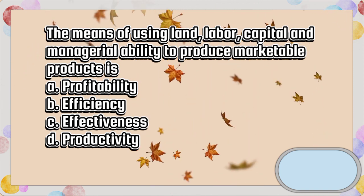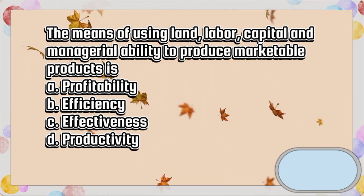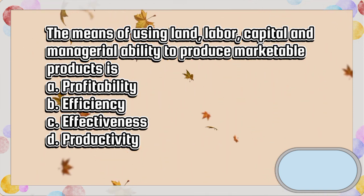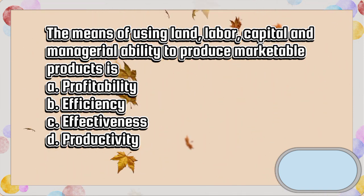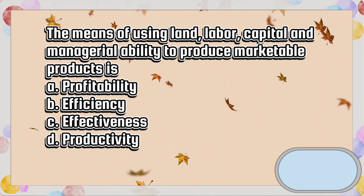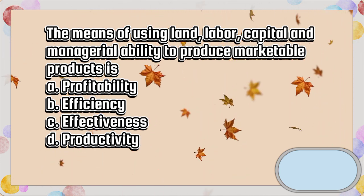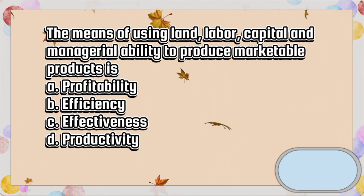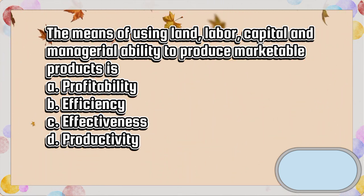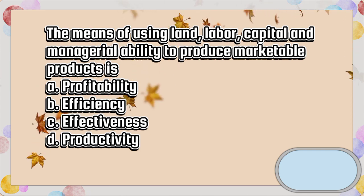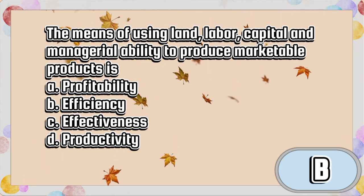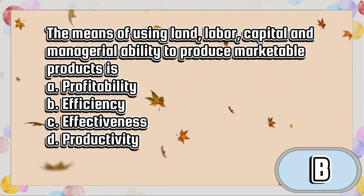The means of using land, labor, capital, and managerial ability to produce marketable products is: A. Profitability. B. Efficiency. C. Effectiveness. D. Productivity. The answer is letter B.